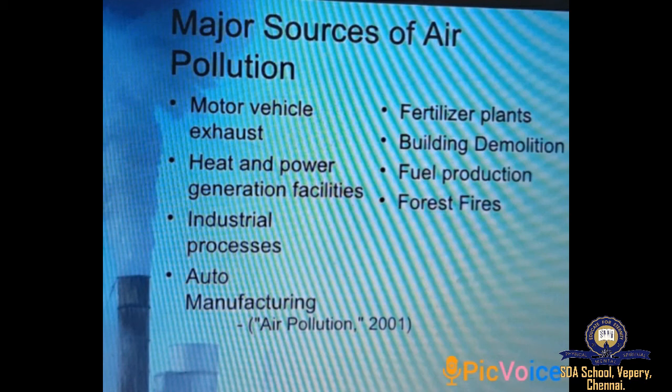Air pollution is the contamination of indoor or outdoor air by a range of gases and solids that modify its natural characteristics and percentage. Air pollution can be categorized into primary and secondary pollutants. Primary pollutants include oxides of sulphur, oxides of nitrogen, and oxides of carbon. Secondary pollutants include ground-level ozone and smog.